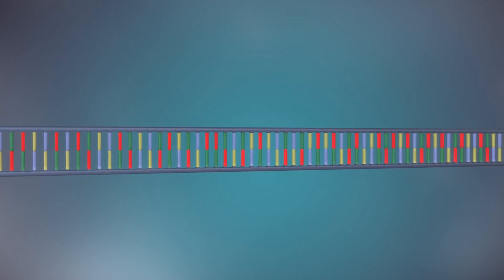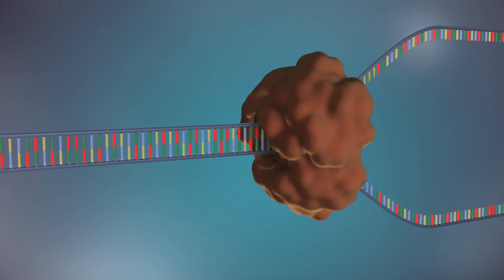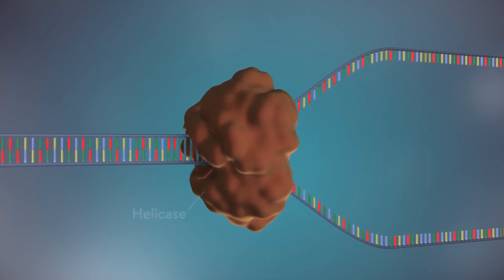The first step in DNA replication is to separate the two strands. This unzipping is done by an enzyme called helicase and results in the formation of a replication fork.